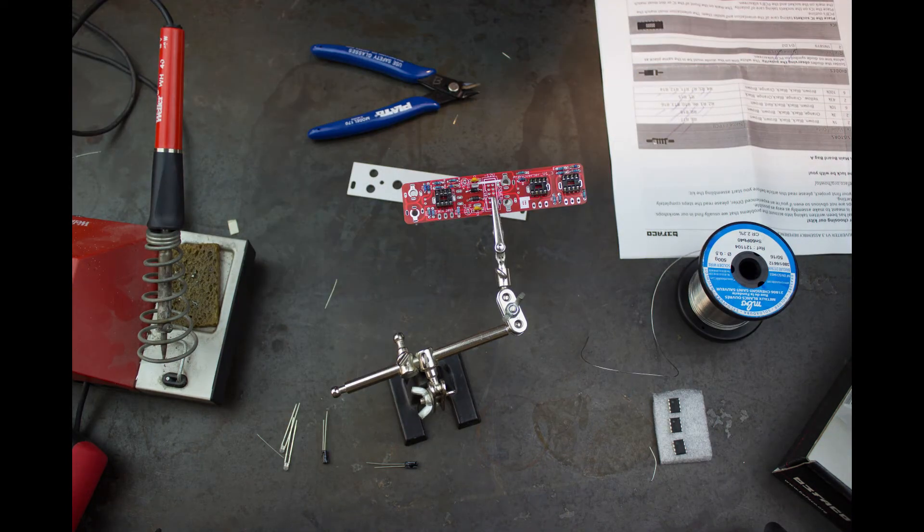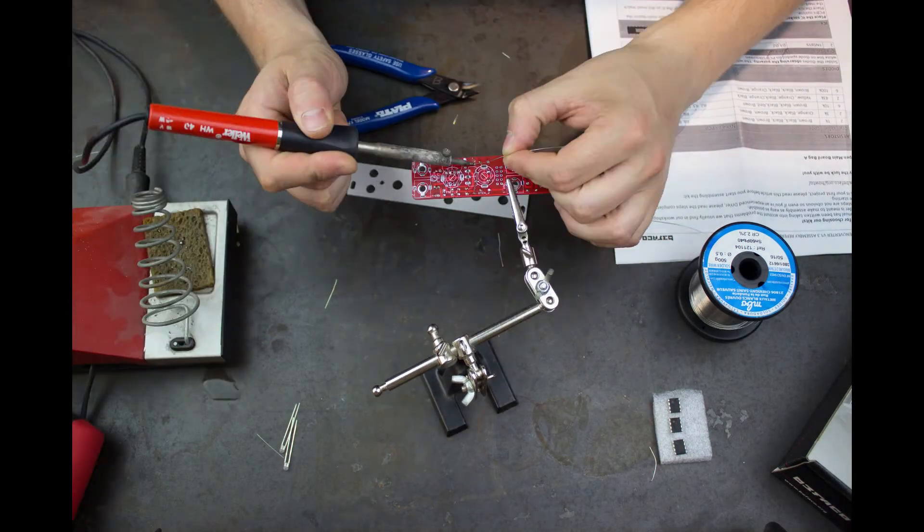First I place the yellow ceramics and solder, snip and mark off the workbook, and then the electrolytics.